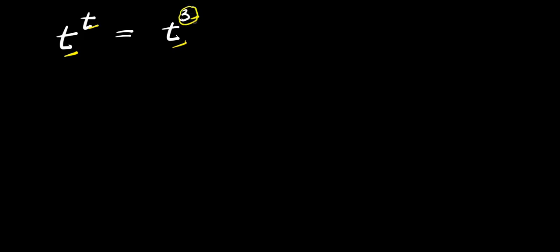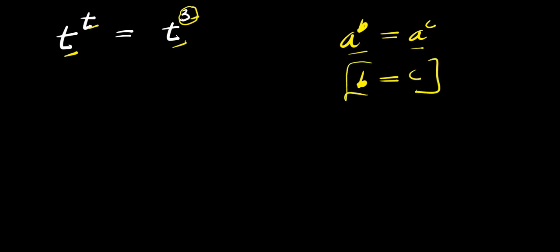Look at it here. The exponent here is 3, meaning we are expecting to have 3 different solutions. Now, if you consider this identity — if you have a to the power of b, and this equals a to the power of c — since the bases are the same, you can say that b equals c. Going by this particular identity, you can also equate the exponents. And I know that is what most of you are going to do. We now have t equals 3.